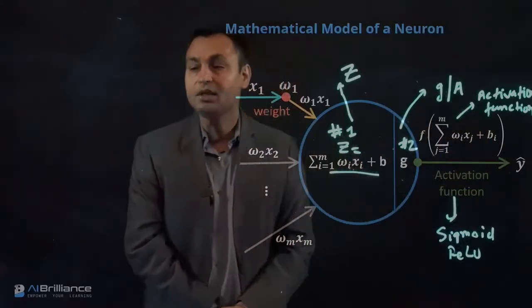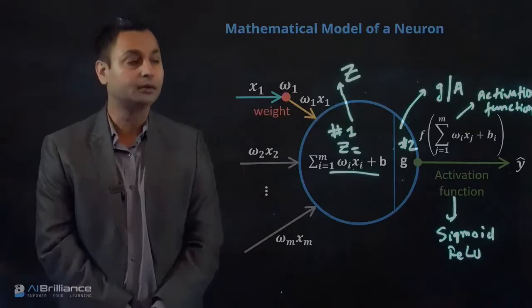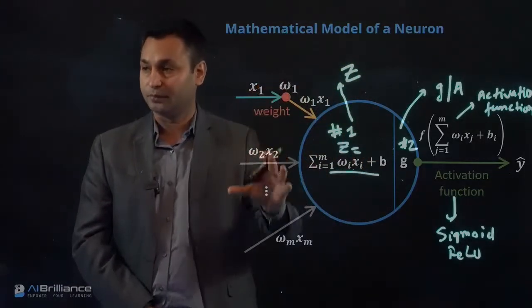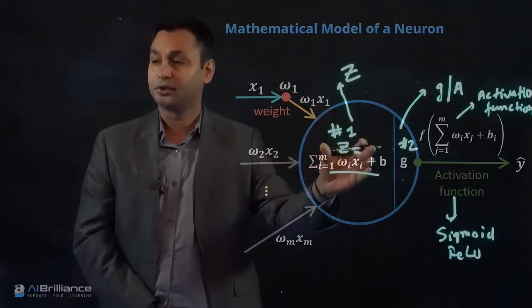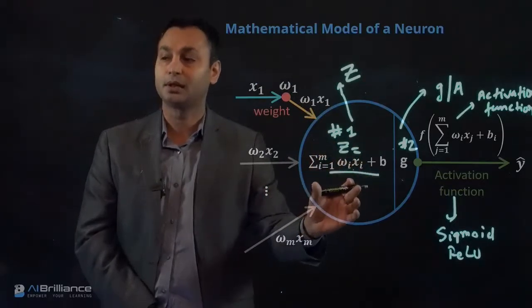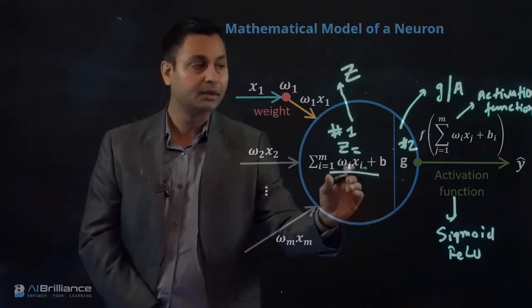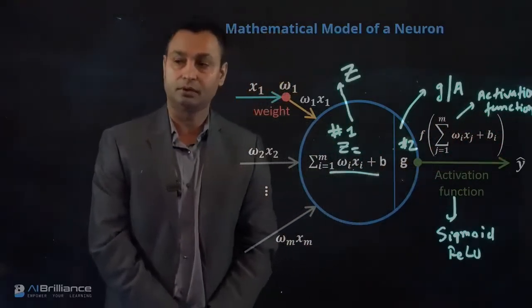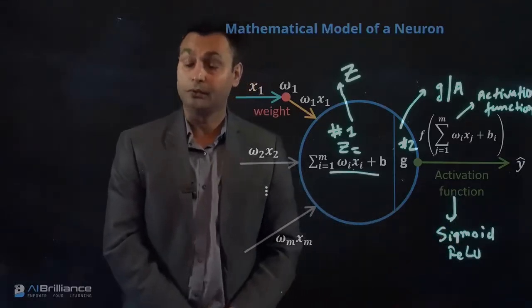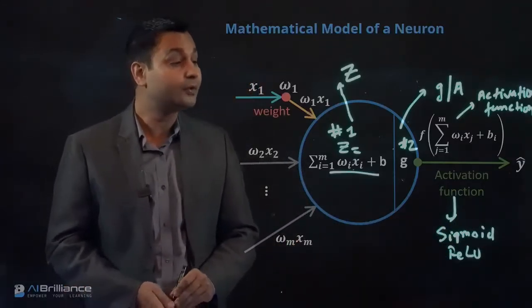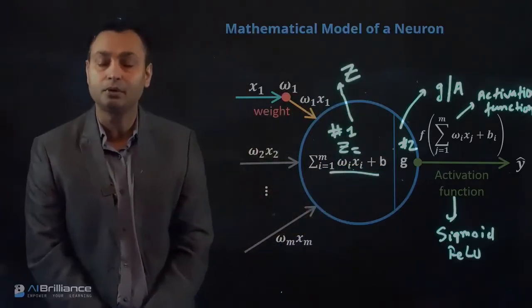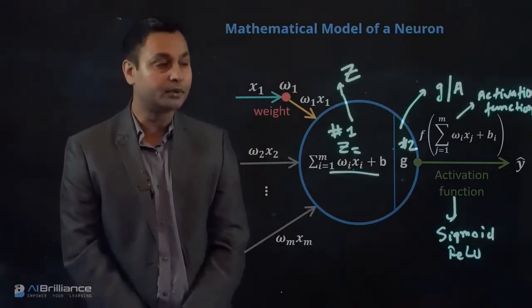But essentially, each of the individual neurons, or what is the mathematical model of a neuron, is essentially taking a set of inputs, doing this Z computation, which is basically taking the linear combination of weights and inputs and adding a bias, and then doing a nonlinear transformation of that through the activation function, which might be sigmoid or ReLU. And that is what is done.